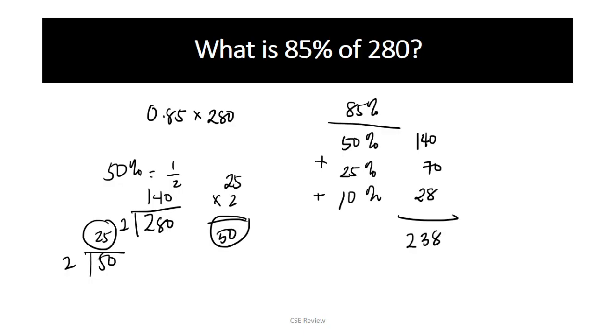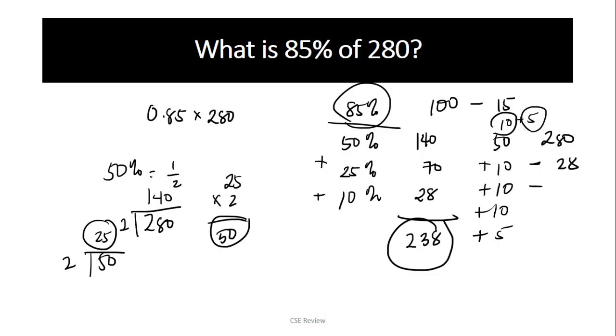We just add them all together. You can put 140 and 70, that's 210, then add 28, giving 238. This is just one option. Some people would do 50 plus 10 plus 10 plus 10 plus 5. That works too. It doesn't matter as long as you arrive at the same answer - it should still be 238. Most of you got it right. Another alternative: since 85% is 100 minus 15, you can solve it as 280 minus the 10% which is 28, minus 5% which is half of 10, so minus 14. Still equals 238.